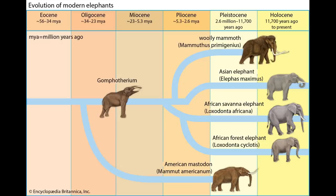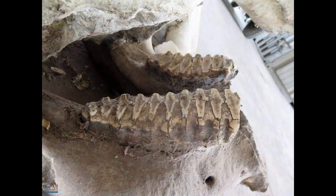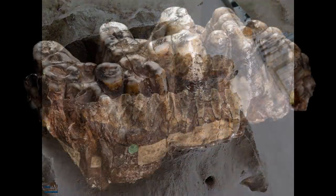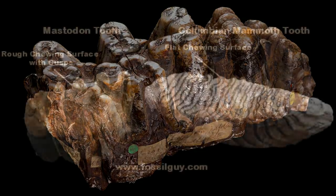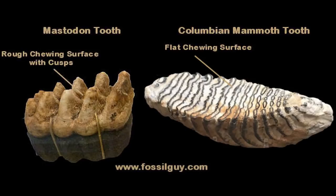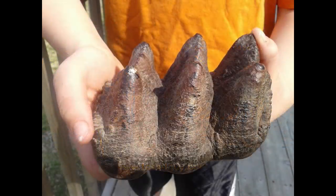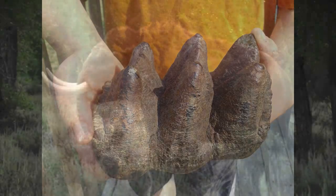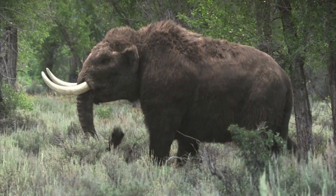However, the structure of mammutid teeth set them apart from modern elephants. Instead of possessing flat, grinding molars utilised for chewing abrasive vegetation such as grasses, mammutids had distinctive cone-shaped cusps on the teeth in a condition known as Zygolophodonty. These striking molars were adapted for slicing and crushing branches, twigs and leaves, with their shape drawing comparisons to human breasts, hence the name Mastodon, which means breast tooth. Analysis of the fossil locales in which these animals lived has revealed that Mastodons generally preferred forested or partially wooded environments and avoided open grasslands.